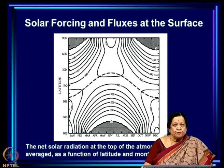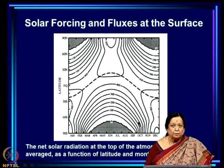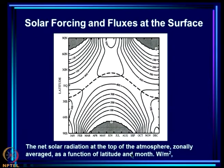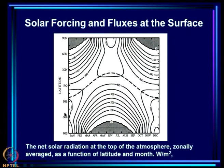This is the solar forcing and fluxes at the surface. What you see here is the solar radiation at the top of the atmosphere, zonally averaged — that is, average across the longitudes — as a function of latitude and month. In May, June, July, which is the northern hemispheric or boreal summer, you see a lot more radiation is incident on the northern hemisphere than on the southern hemisphere. The opposite is true in December, January, February, which is the austral summer, where you get a lot more radiation in the southern hemisphere.